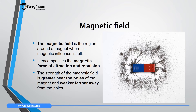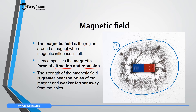A magnetic field is defined as the region around a magnet where the magnetic influence is felt. Magnetic influence involves attraction and repulsion. As you can see the diagram on the screen, there are some regions around this magnet where magnetic materials get attracted when they approach. If you bring a north pole close to this north pole, there will be a repulsion. The area where the force of attraction or repulsion is felt is what we call a magnetic field.